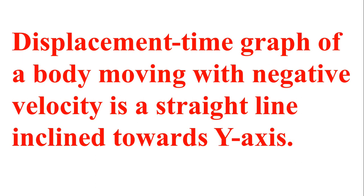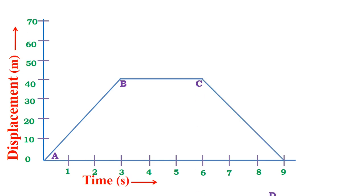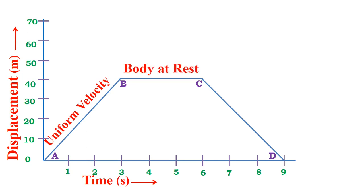We can represent all three states in the same displacement time graph. This body starts to move from 0 and takes the path AB, then the path BC, and then the path CD. The part AB represents uniform velocity, BC represents the body at rest, and CD represents the body moving with negative velocity. This way we can understand the displacement time graph.